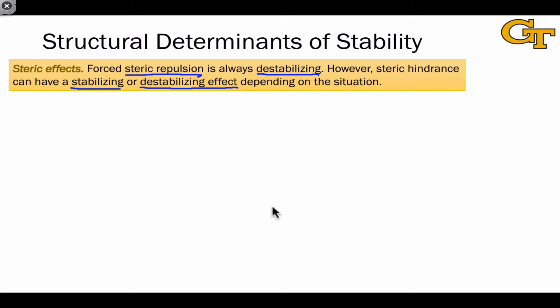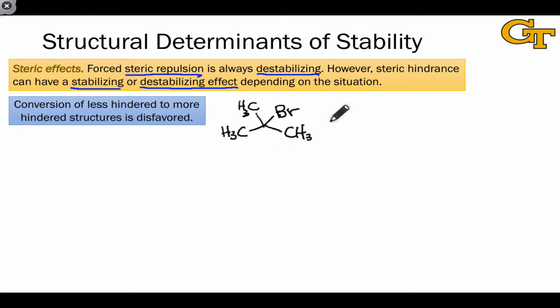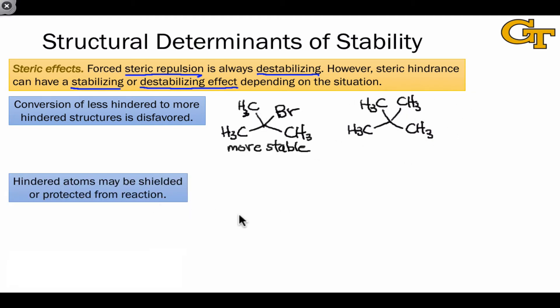So let's look at a few situations where steric hindrance comes into play. Conversion of structures that are less hindered to structures that are more hindered tends to be disfavored thermodynamically. As a quick example of this, the tert-butyl bromide molecule shown here is generally more stable than a molecule where bromine has been replaced with a methyl group since the methyl group is somewhat larger and engages in steric repulsion with the other methyl groups in the molecule. Hindered atoms may be shielded or protected from reaction with other molecules.